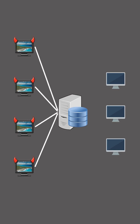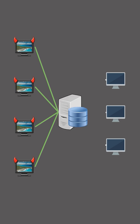In a distributed denial-of-service attack, a group of malicious nodes floods a server with so many requests that it can't handle them all. This overload makes the server inaccessible for genuine users trying to access it normally. The goal is to disrupt the server's operations, causing downtime or slowdowns that can impact businesses and users. Denial-of-service attacks use different techniques like flooding the server with traffic or overwhelming it with requests, making them difficult to stop once they start.